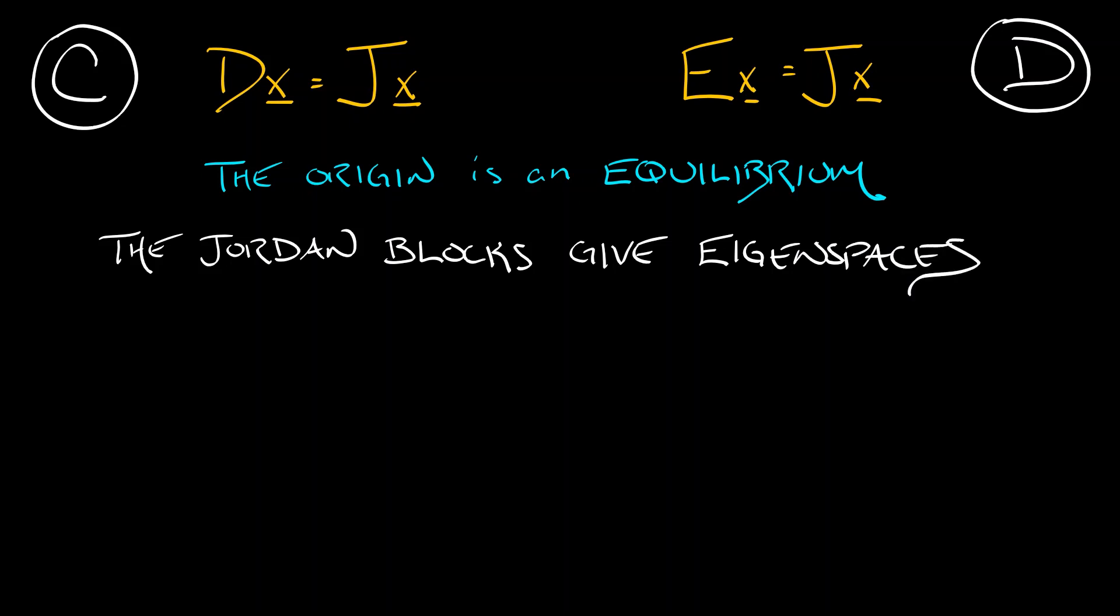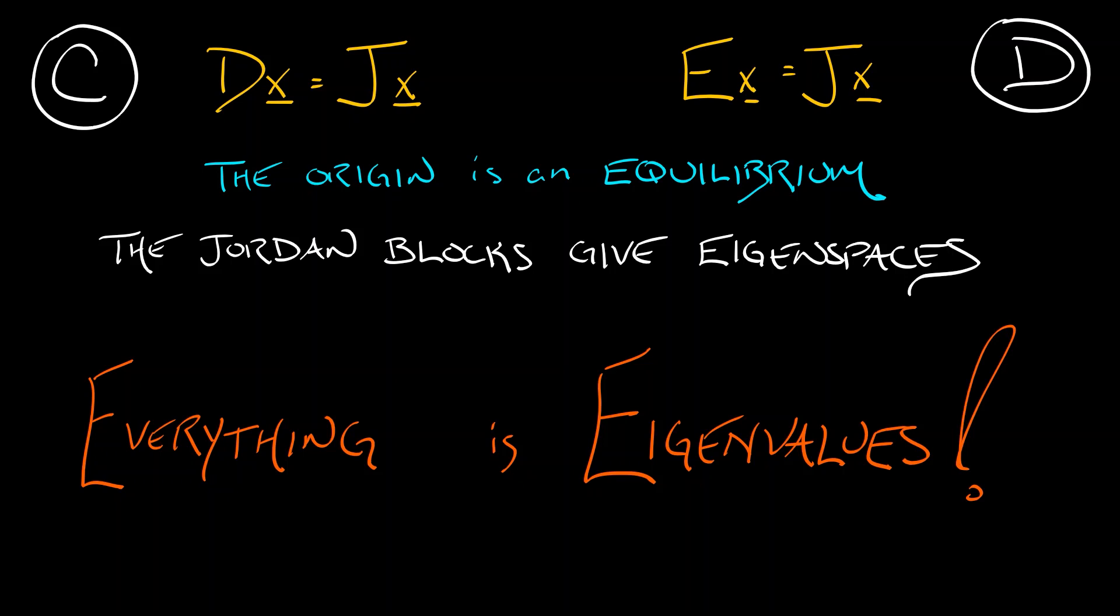Everything, everything is eigenvalues. Now why are we making such a big deal out of this? Well, in 1D or in 2D we could draw pictures, we could see everything that was going on. But we can't do that in n dimensions. We need to think in terms of eigenvalues.